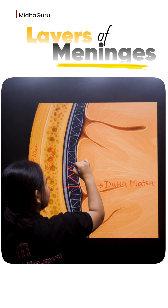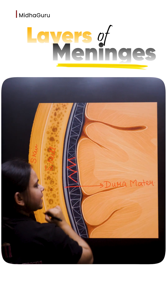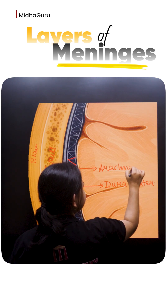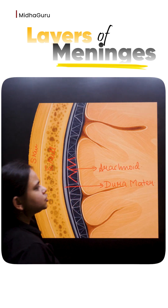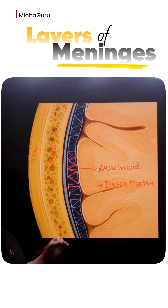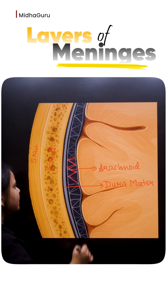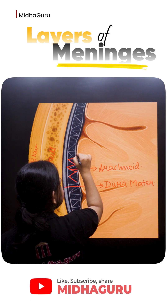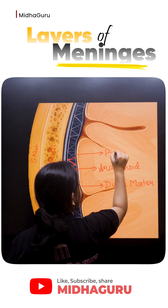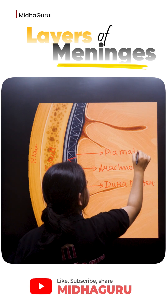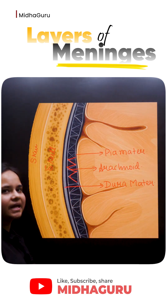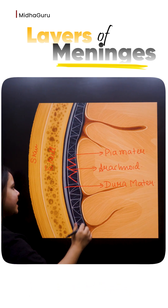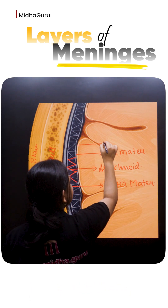Then we have this web-like or network-like layer which is called as arachnoid, which acts as a cushion to protect the brain from any kind of mechanical injury. The innermost layer, which is in contact with the brain tissue, is called as pia mater, which is highly vascular — that means it has blood vessels and nerve fibers. Then we have the brain.